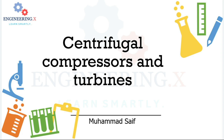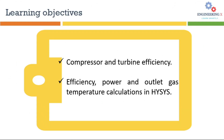Gas processing is a bit complicated compared to liquid streams because of its compressible nature. When gas passes through a machine like a compressor or turbine, its properties change with respect to temperature and pressure. For example, the change in density in a gas stream is much higher compared to a liquid one.